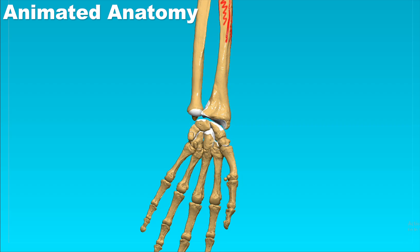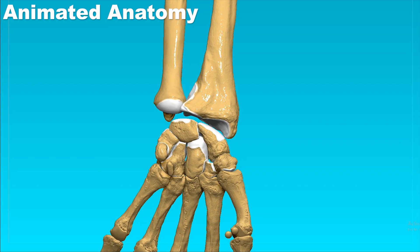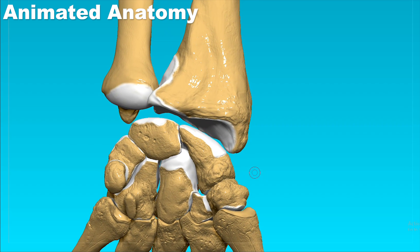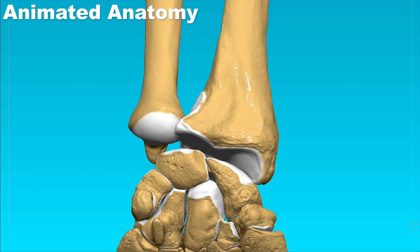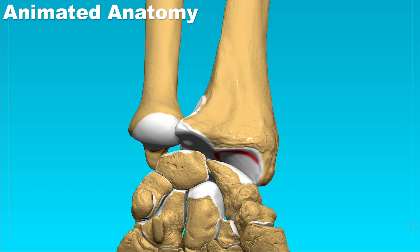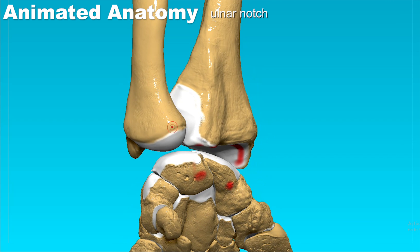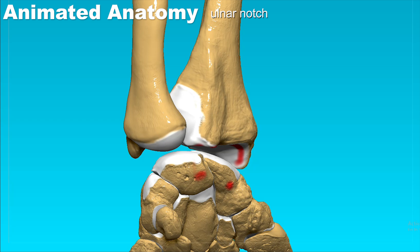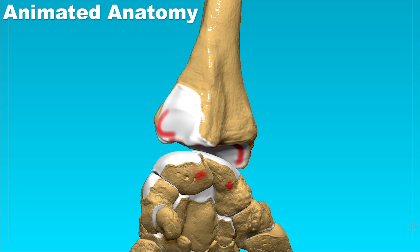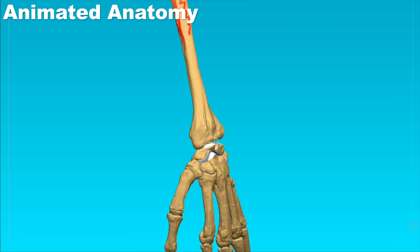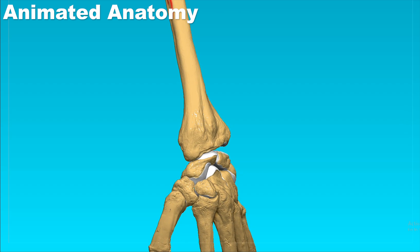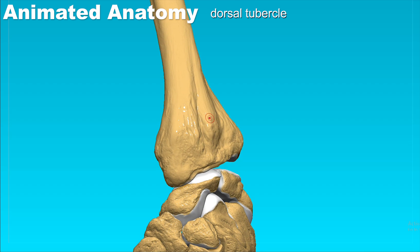The radius distally articulates with the scaphoid and the lunate bone. This distal surface can be somewhat divided into two portions: one for the scaphoid and another for the lunate bone. We also have the ulnar notch, which accommodates the head of the ulna, and on the dorsal side we can find the dorsal tubercle.